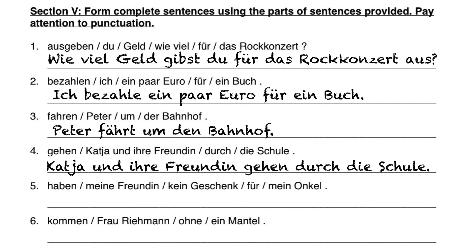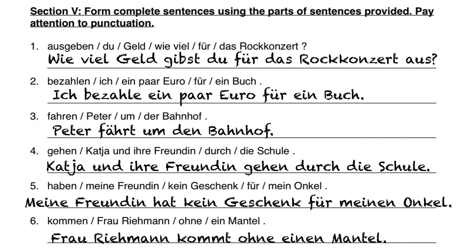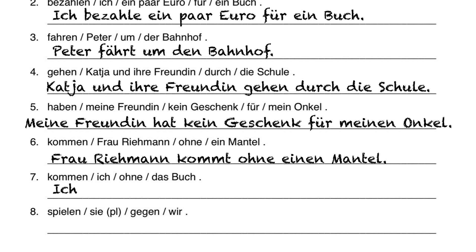Nummer fünf: we have a couple of different options — die Freundin or mein Onkel as the subject. I chose my girlfriend as the subject: meine Freundin hat kein Geschenk für meinen Onkel. Meinen Onkel because it's masculine accusative — accusative because of the preposition für. Nummer sechs: Frau Riemann kommt ohne einen Mantel. Mrs. Riemann is coming without a coat. Nummer sieben: Ich komme ohne das Buch. I am coming without the book.